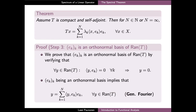At this point we have constructed the sequence λ_k of eigenvalues and the corresponding orthonormal set of eigenvectors e_k, which have the basic properties stated in our theorem. The remaining task in the proof is to prove that the image Tx has exactly the form given in the theorem, which we accomplish by first proving that the sequence e_k forms an orthonormal basis of the range of the operator T.